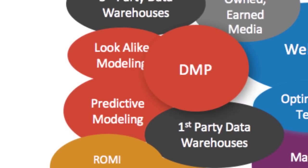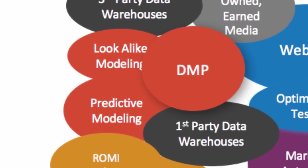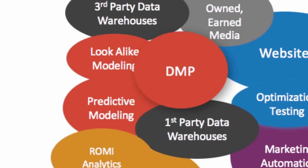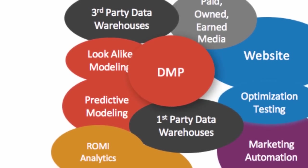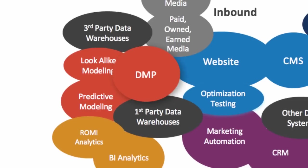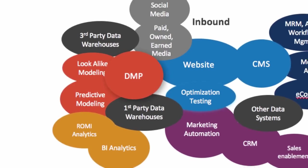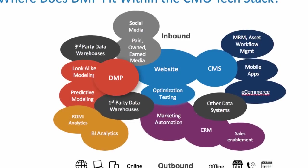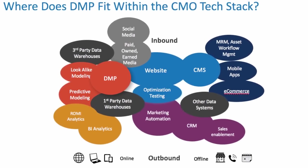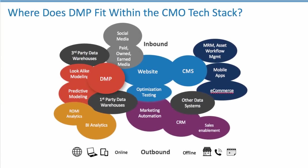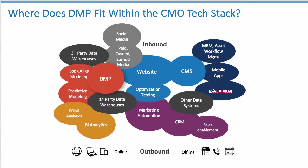If we step back to the 30,000-foot level, we need to understand where a DMP platform sits within the entire CMO tech stack. Here we see in red where the DMP is. You'll notice that it interacts with most of your other platforms including your website, your CMS, your marketing automation, BI analytics, and more. The challenge is, if you don't have all of these implemented, you're going to need a roadmap to determine which you should start with next.